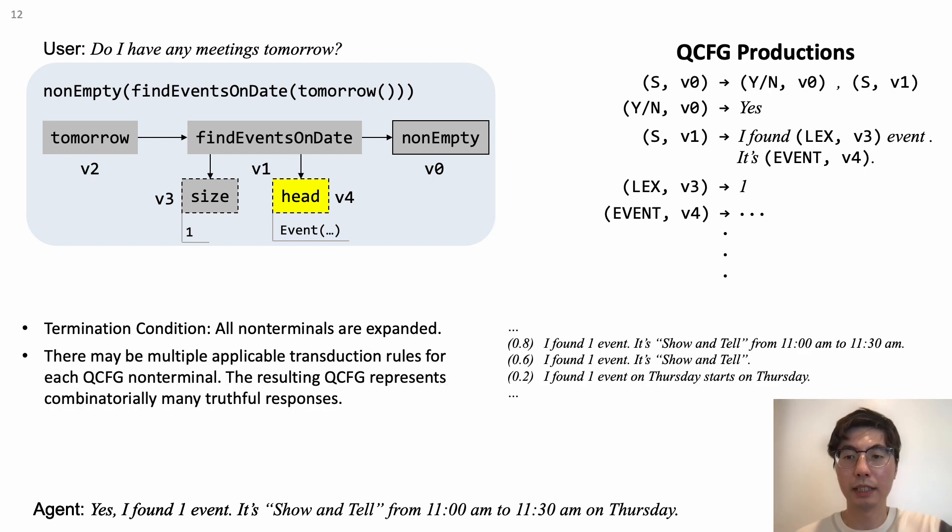Note, there may be multiple transduction rules for each QCFG non-terminal, so the resulting QCFG represents a large number of truthful responses, and they vary in their information content, participation order, linguistic style, and choice of terminals.